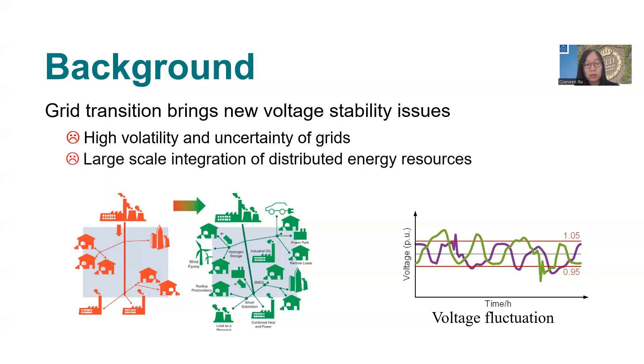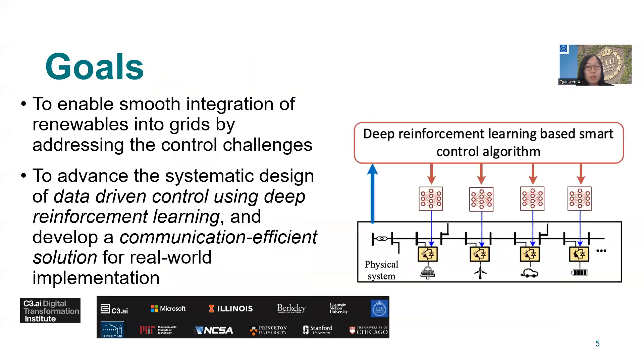Moreover, optimal coordination of a large number of converters requires high communication burden. Our belief is that AI and machine learning will play a key role in improving control methods of converters by making them all more adaptive and intelligent to stabilize the complex and changing power grids. Therefore, the goal of this project is to enable smooth integration of renewables into grids by addressing the voltage control challenges, as well as to advance the systematic design of data-driven control using deep reinforcement learning for environment-adaptive, stability-guaranteed, and communication-efficient grid operation.